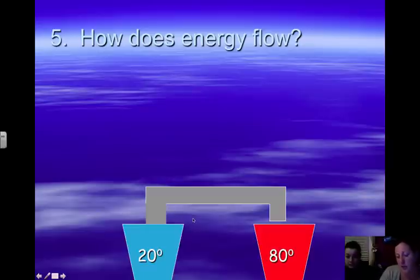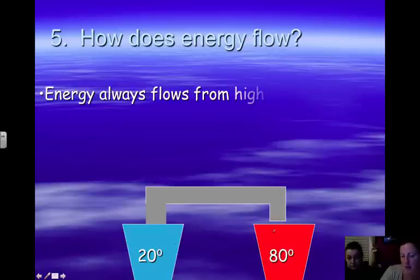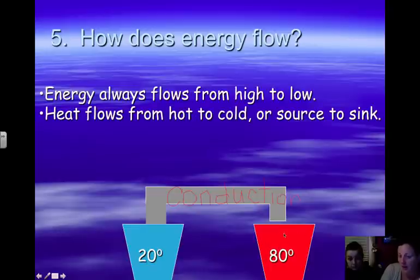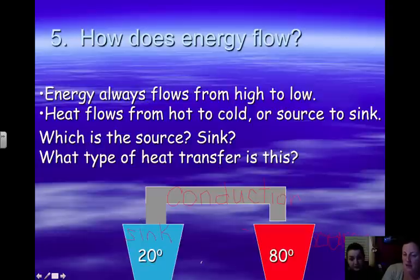How does energy flow? Here we're looking at two cups of water. One is at 20 degrees and one is at 80 degrees. We've got a metal bar in between them. What type of heat transfer would this be utilizing? This would be showing conduction. Which way will the energy flow? From which cup will heat be transferred to the other? Your energy always flows from high to low or from hot to cold, which is also known as from source to sink. In this example here, the 80 degree cup would transfer heat across the bar. The molecules would collide against each other into the cold cup, which would be heated up. The source would be your 80 degree cup and the sink would be where the heat is going into, which would be our 20 degree cup. What type of heat transfer is this? We said it is conduction.